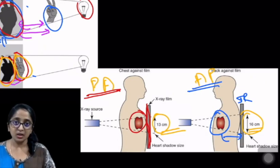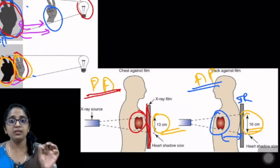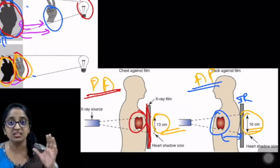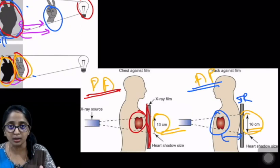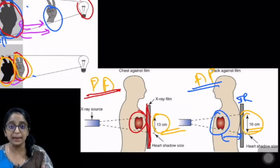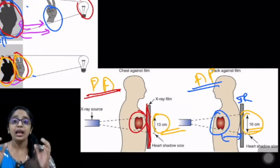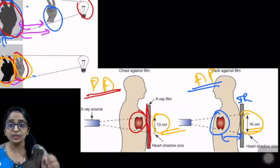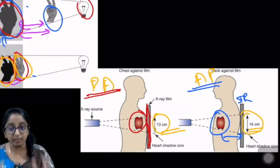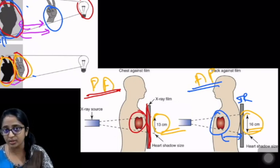You must never ever comment on the heart size — the cardiac size — on an AP film. If you compare AP and PA projection of the chest of the same person, you can observe that the cardiac size appears enlarged in the AP radiograph. It will lead to you spuriously diagnosing cardiomegaly in relatively normal patients. So never ever comment on the cardiac size in the frontal AP radiograph.